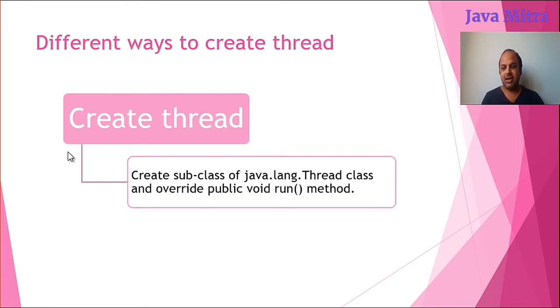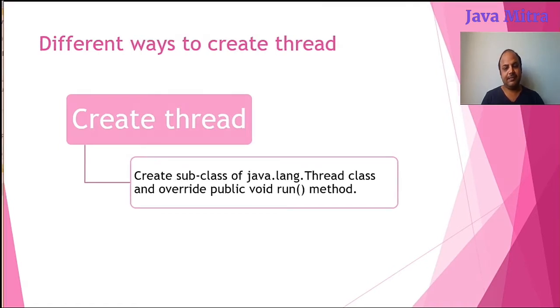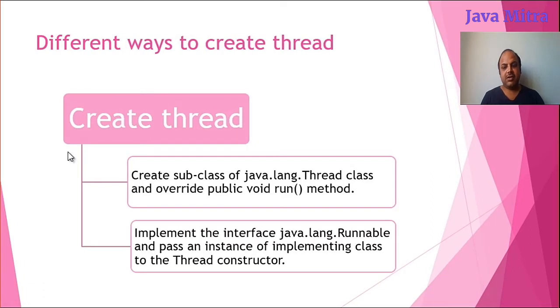And the second one is implement the interface java.lang.runnable and pass an instance of the implementer class into the overloaded constructor of thread class.